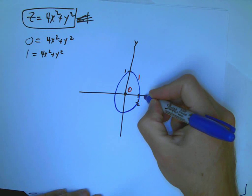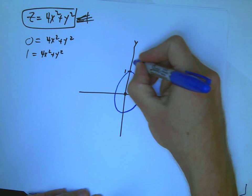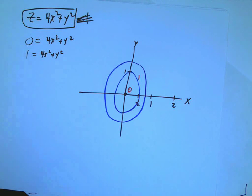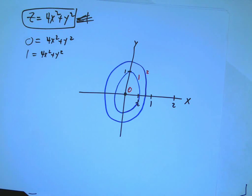And then the next one was 1 over root 2 and root 2, so somewhere about here. That's just terrible. I'm just getting worse and worse at drawing ellipses as I get older.